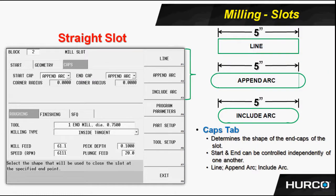Then we have the caps. We describe the center slot — in many cases we've described the point from center to center of the two radiuses on the end of the slot — but that is controlled by the start cap and end cap pull-down menus. The three selections would be: line, meaning the slot end is blocked off with straight lines and would look like a frame; append an arc, where appended arcs are added to the end points of that 5 inch center line; or include the arcs within that 5 inch length distance.